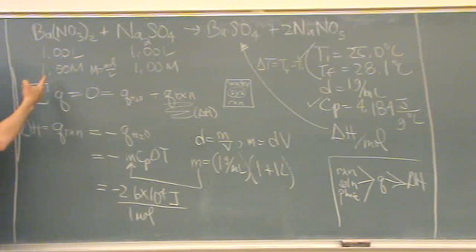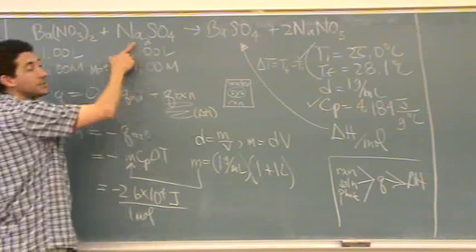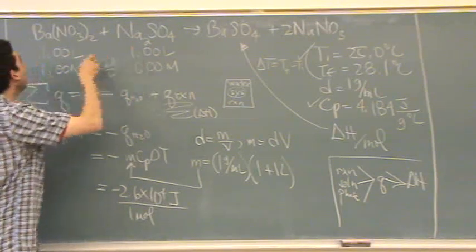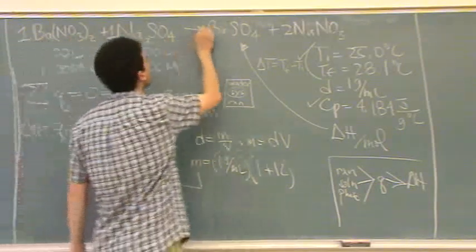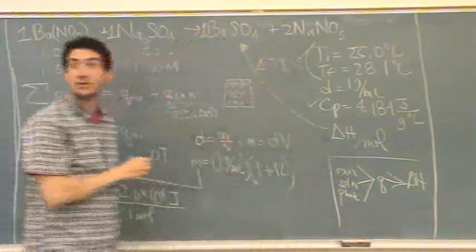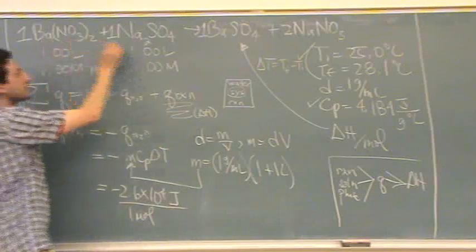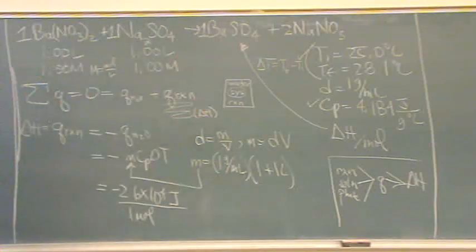Well, 1 times 1, there's 1 mole of this. 1 times 1, there's 1 mole of this. And see, I've already balanced it. It's 1, 1, 1, and 2. So if there's 1 mole of this, there's 1 mole of this. So that's where that 1 mole came in from.